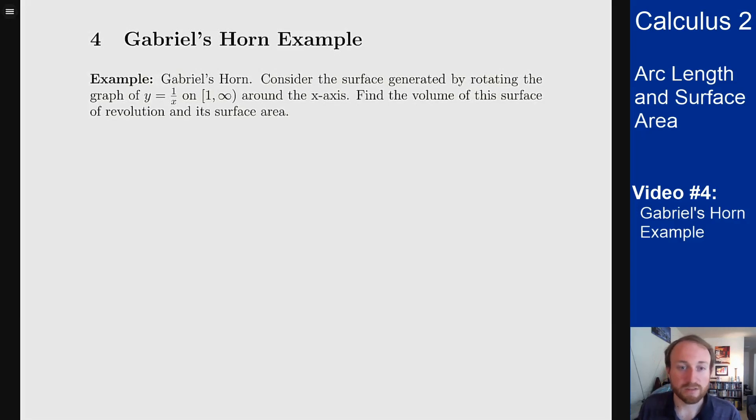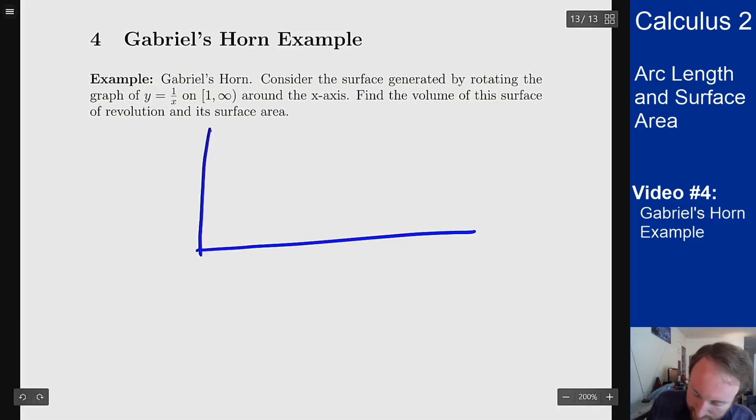We want to figure out what is the volume and what's the surface area of this solid of revolution. The picture you have in mind here: here's the graph of one over x, and I'm rotating this around the axis here.